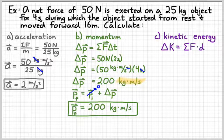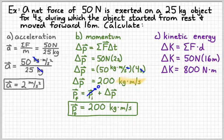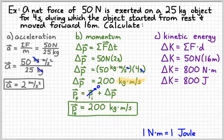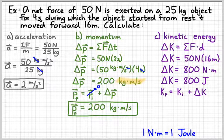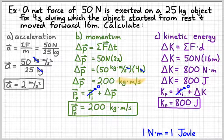Using the third form of Newton's second law, we can find the kinetic energy: change in kinetic energy equals force times displacement. Substituting in our numbers, 50 newtons times 16 meters gives 800 newton-meters. A newton times a meter is called a joule, symbolized with a capital J. Since the original energy was zero because the object started at rest, the final kinetic energy is 800 joules.